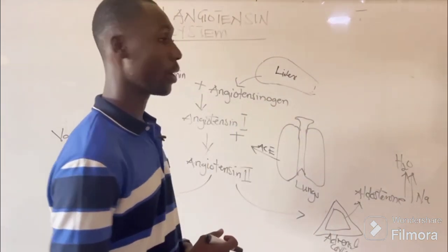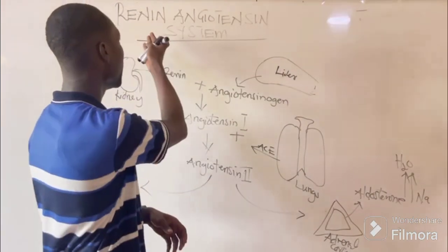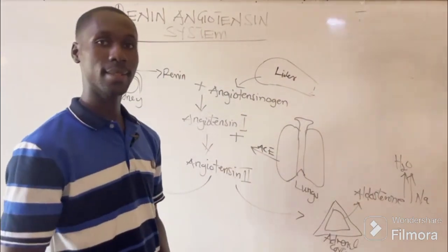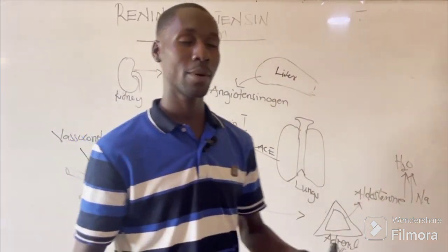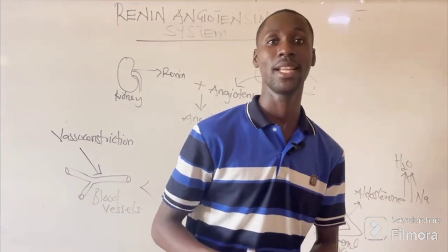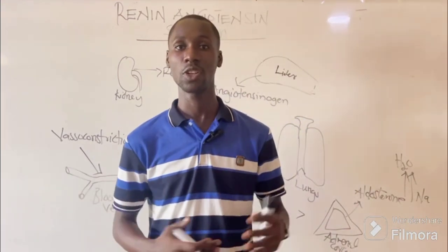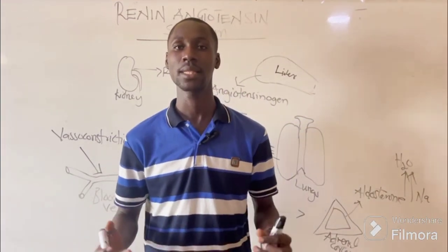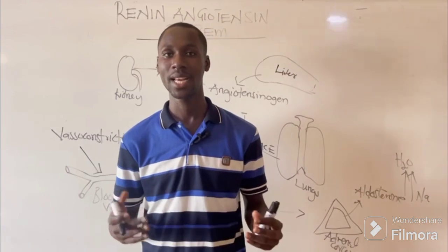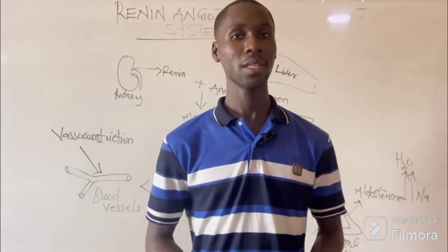Without wasting time, we are going to start with the Renin-Angiotensin System. Someone will ask: what is the Renin-Angiotensin System? It is all about fluid and electrolyte imbalance in the body — specifically, how fluid and electrolyte imbalances are being corrected in the body.